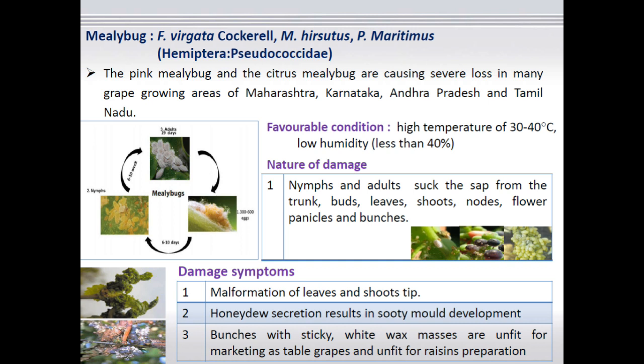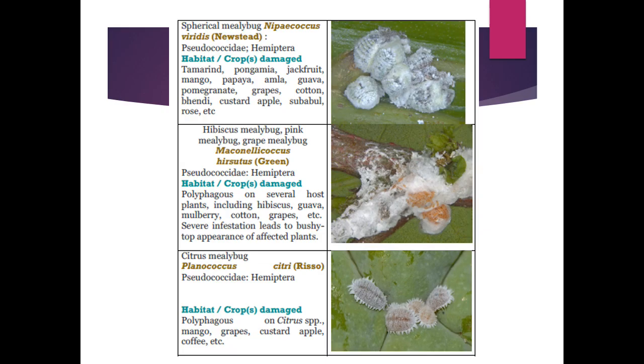If they are continuously sucking the cell sap from the leaf, then such leaves will develop crinkling and curling symptoms, and ultimately they will dry and wither off. Most importantly, if they attack flowers or flower panicles and the bunches, they suck the cell sap resulting in poor fruit setting. On fruits, complete stalks as well as berries will be infested by the mealybug, which not only reduces the quality of the fruit but also leads to drying and dropping of the fruit.